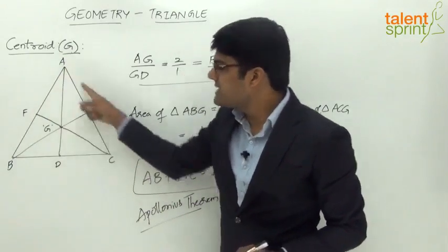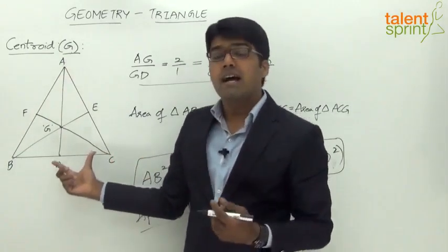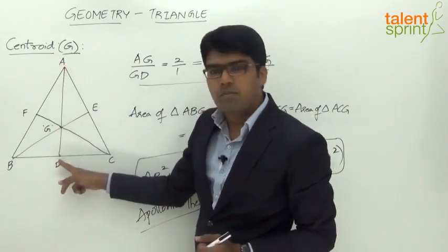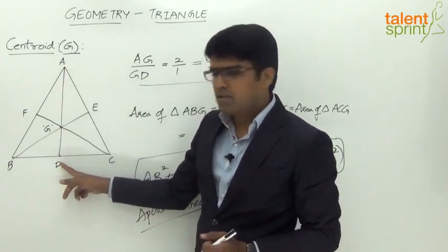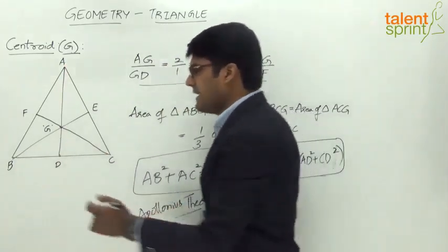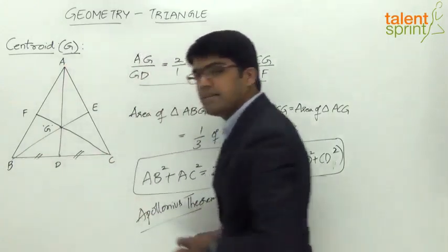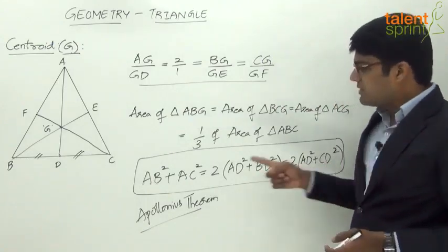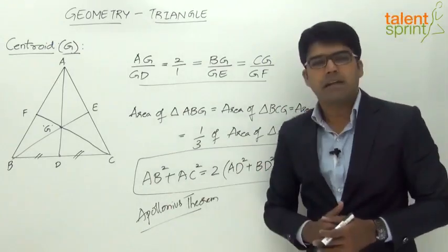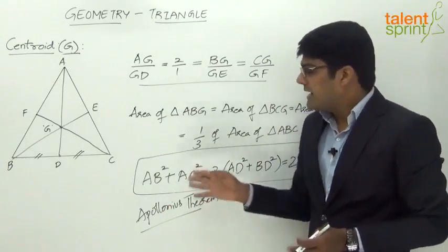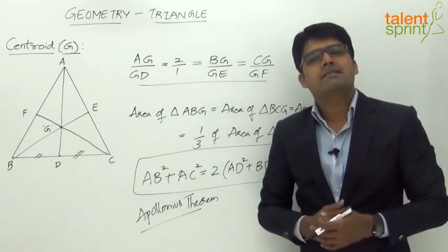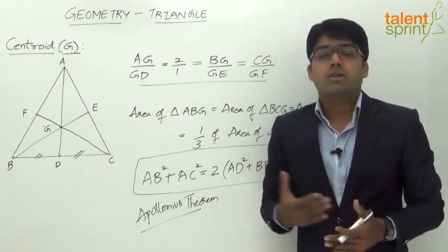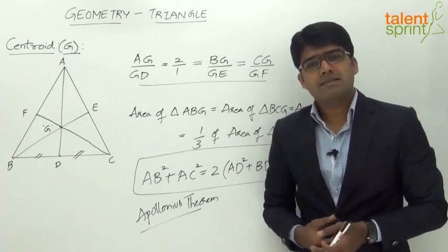We have already considered two sides AB and AC. The third side here is BC, and D is the midpoint, so half of the third side can be taken as BD or DC — both are equal. Therefore the formula is: AB² + AC² = 2(AD² + BD²) or 2(AD² + CD²). This theorem is named after the mathematician Apollonius.